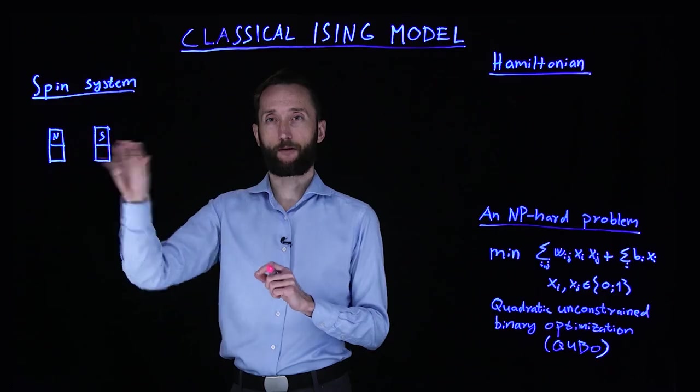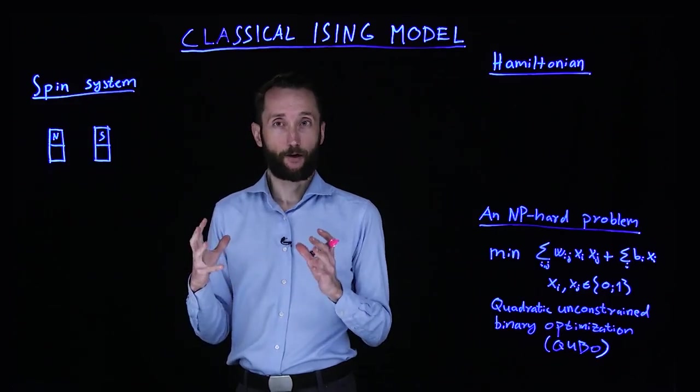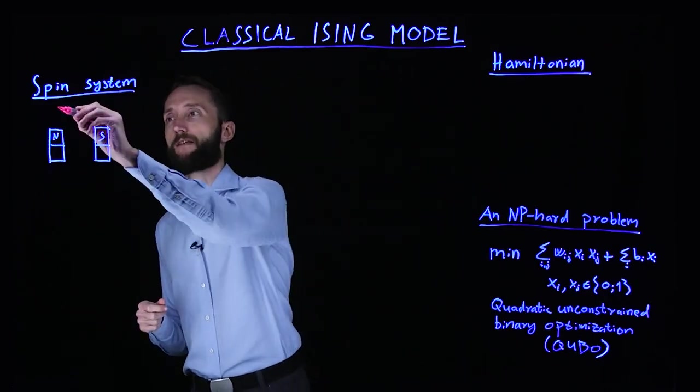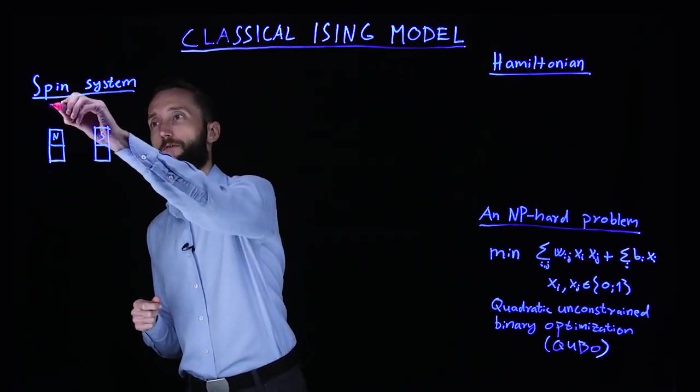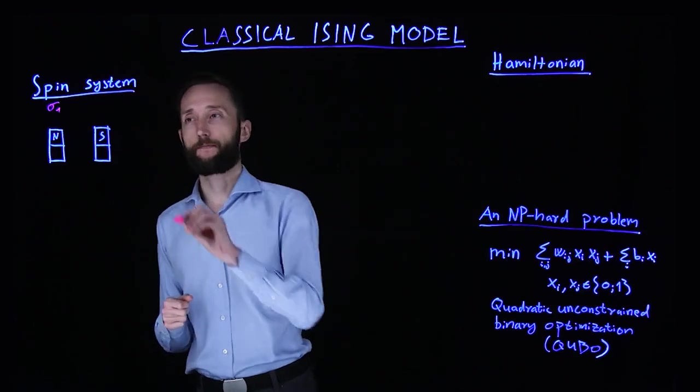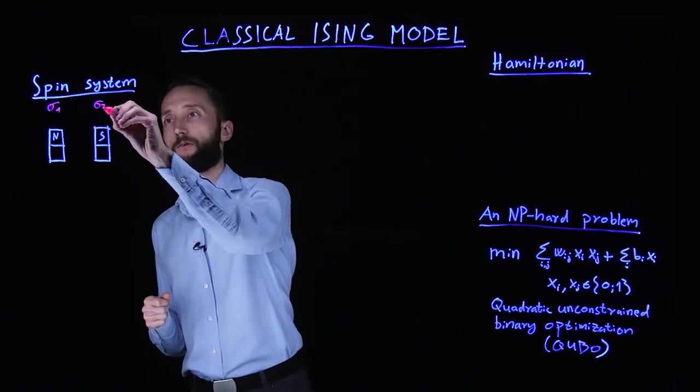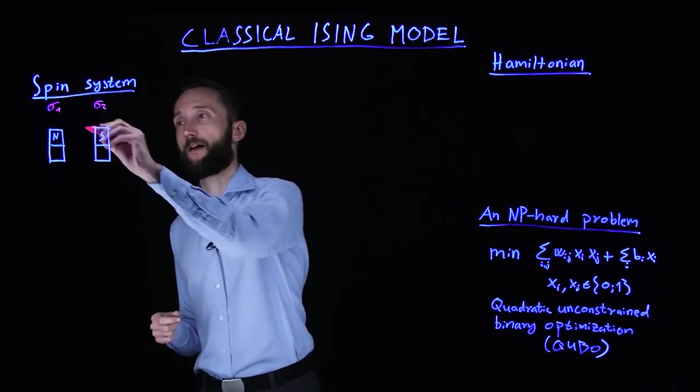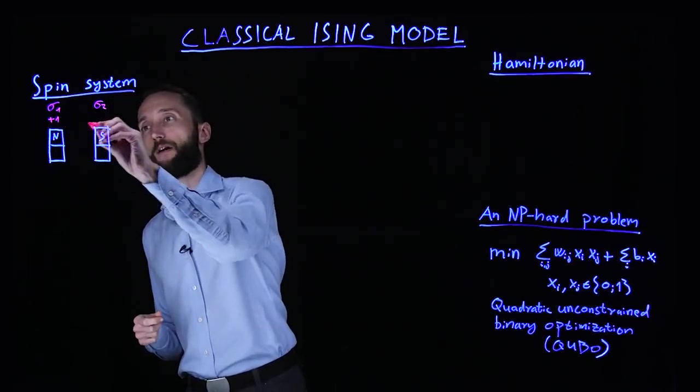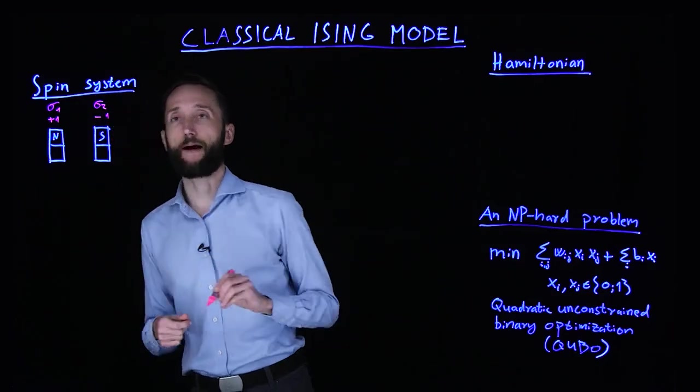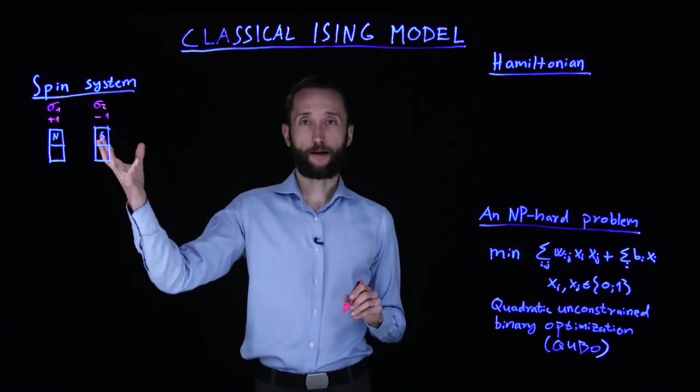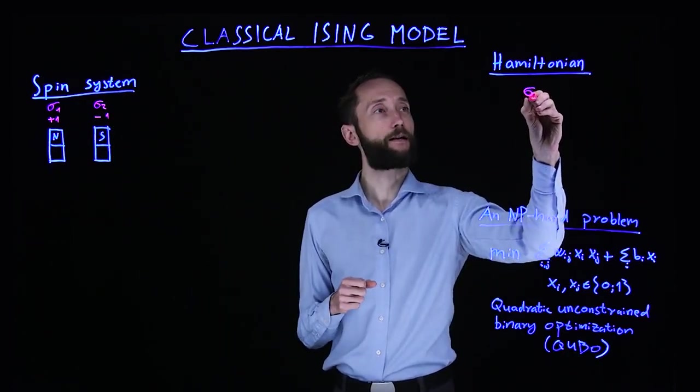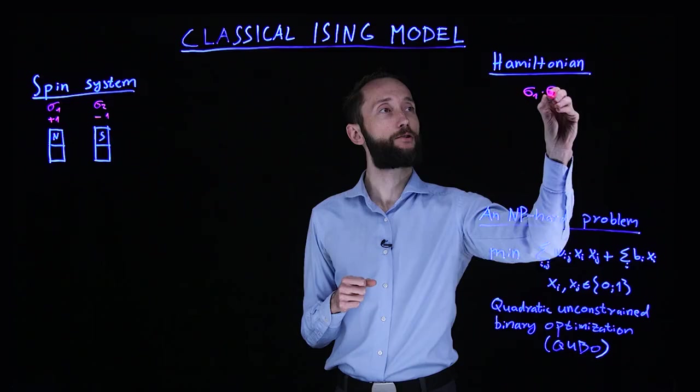So this will be their optimal energy configuration. If you identify random variables with them, for instance, this is some random variable sigma 1, this is some random variable sigma 2. And you say that the north phase pointing up is the value plus 1, this is the value minus 1. Then you can write down that the energy of this system is sigma 1 times sigma 2.